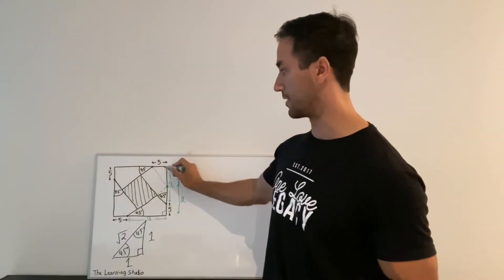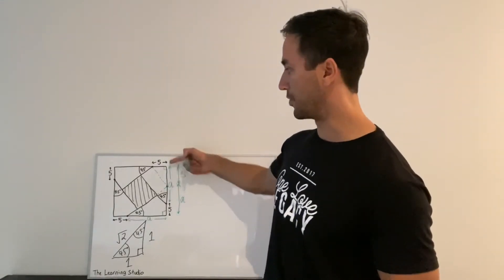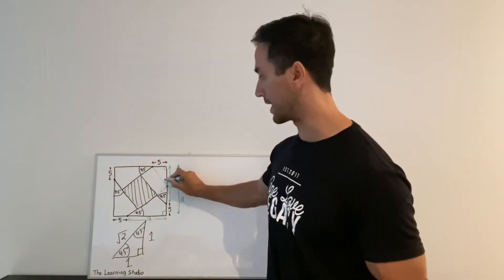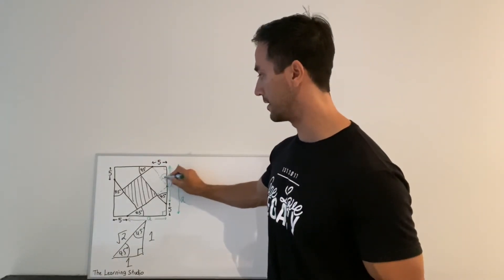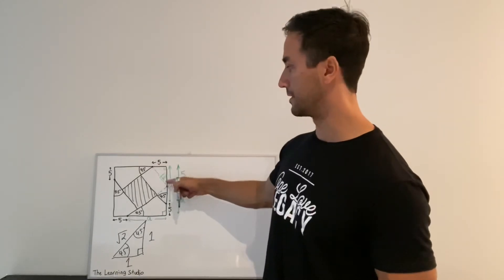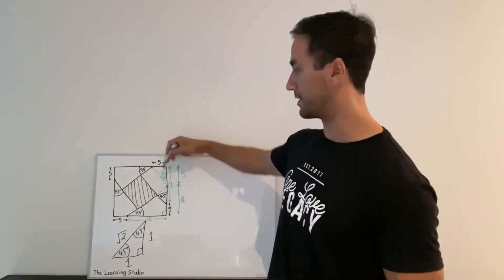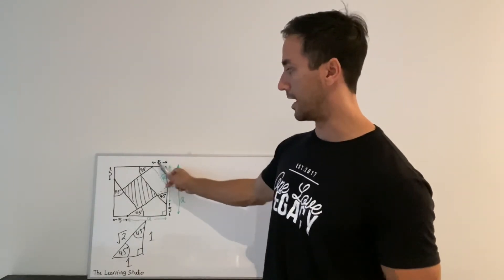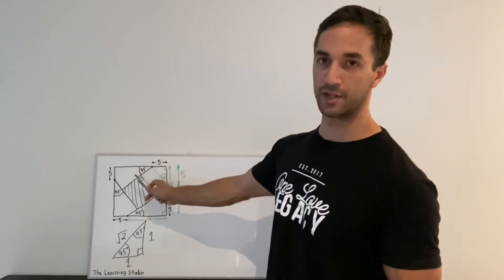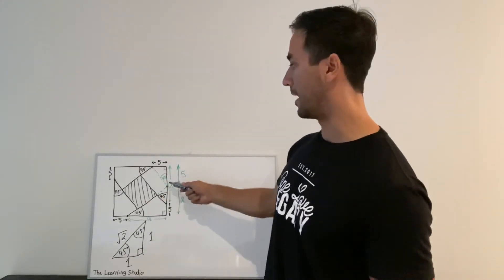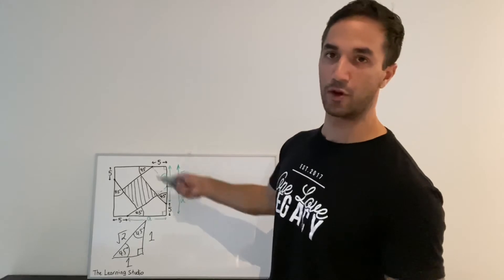So that means that if we now connect these dots, these points here, we get another right angle triangle and both these sides the same length so this is actually also 45 degrees, which means that this line we've drawn here, this dashed line in green, it's parallel to the edge of the small square and it must be the same length because it's going between the same two lines.